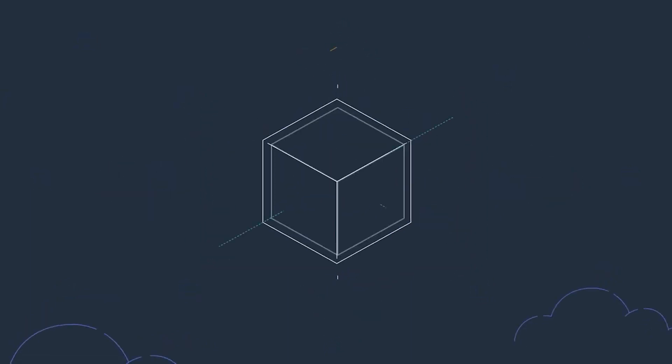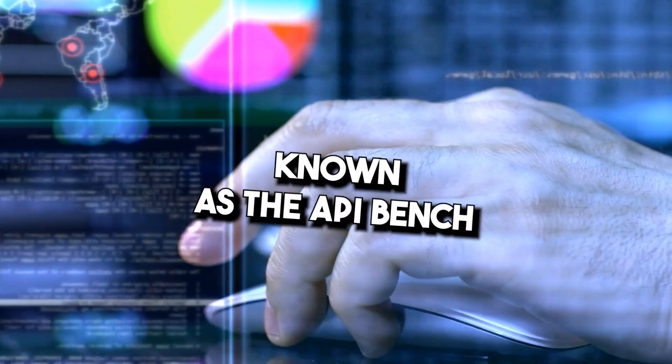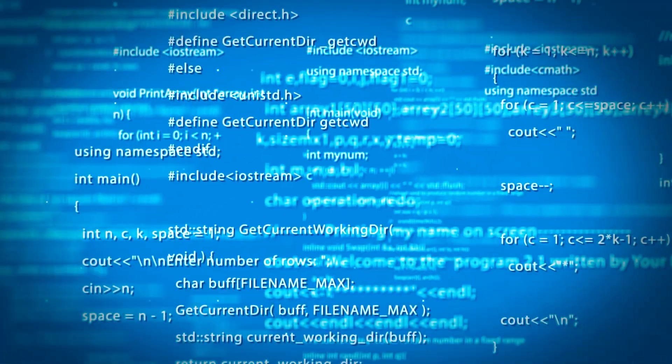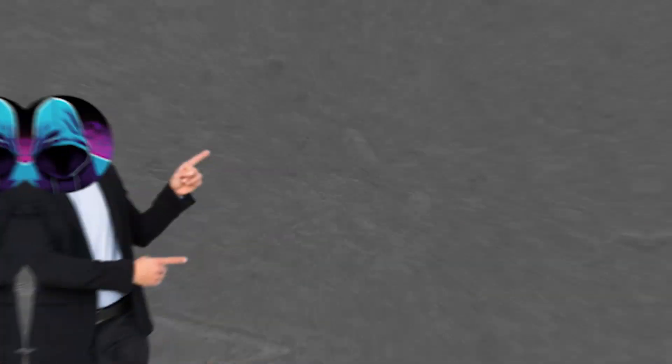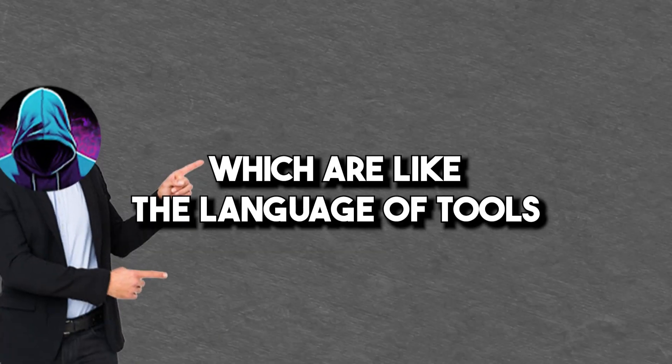Gorilla AI's system is built on a more advanced version of something called Llama 7D. It learns from a carefully put together set of commands, known as the API bench. These commands come from different machine learning platforms. Gorilla AI learns and understands these commands, which are like the language of tools.